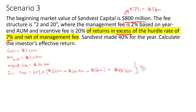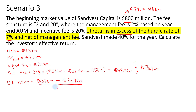The total fees added together is $70.72 million. So the effective return is the gain of $320 million minus total fees of $70.72 million, divided by $800 million times 100%, which gives us 31.16%. That's how you handle a hard hurdle rate.